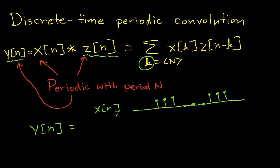We'll convolve X with itself. So we want to find X of N convolved with X of N. The process, again except for the fact that we're summing over one period, is exactly the same as when we did non-periodic signals.